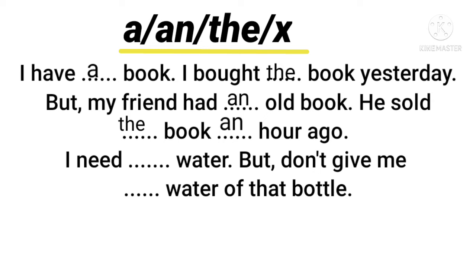Next: 'I need ___ water.' Here, 'water' is an uncountable noun. When we use uncountable nouns for the first time in general terms, we do not use any article. So the correct sentence is: 'I need water' — no article.